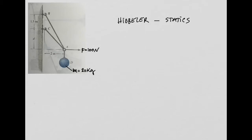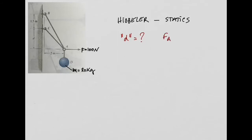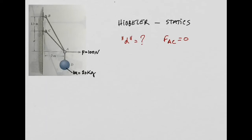The question is: what is this distance D — the height between point A and point C — so that the force in cable AC equals zero? When we're talking about cables, a cable can only carry tension forces. It cannot carry compressive forces — if you try to apply a compressive force, the cable cannot carry it.